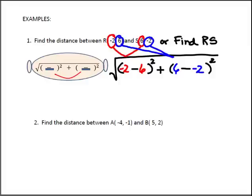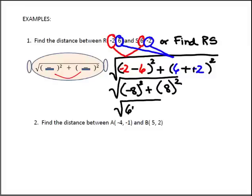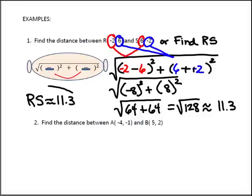Now, I'm going to simplify this. I'm going to do parenthesis first. Negative 2 subtract 6 is negative 8 squared. Plus, 6 subtract negative 2. Two negatives make a positive 8 squared. Don't forget the headband or the square root sign. Negative 8 squared means negative 8 times negative 8, which is 64. Plus, 8 times 8 is also 64. This is equal to the square root of 128. And, if you type in the square root of 128 on your calculator, you will get approximately 11.3 for an answer. So, the distance between R and S is 11.3 units. I would write RS is approximately 11.3 and circle it.